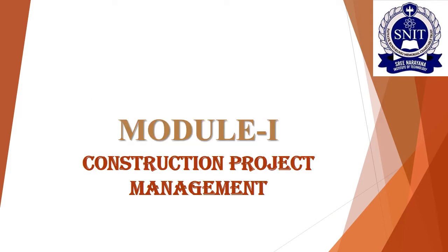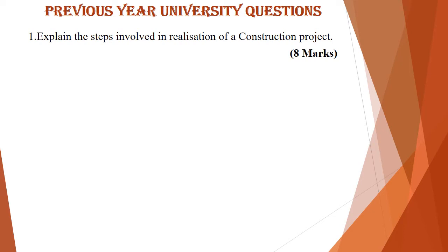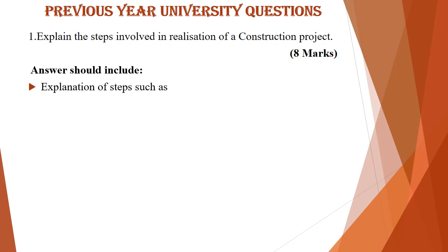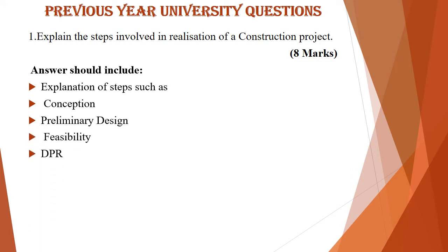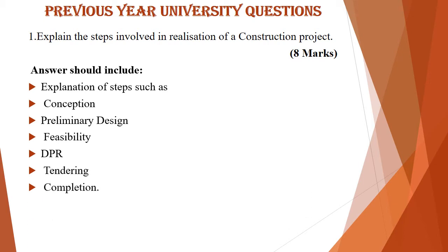Module 1 is Construction Project Management — Introduction to Construction Project Management — and today our topic of discussion is previous year questions from module 1. The first question asked was: explain the steps involved in realization of a construction project, which is asked for 8 marks. The steps involve: first, conception; preliminary design; feasibility; the detailed project report or DPR; tendering; and completion of the work.